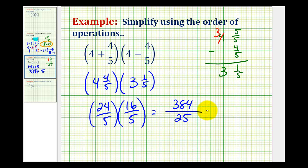But let's go ahead and convert this to a mixed number, just in case. This fraction represents division, so we're going to take 384 and divide by 25.